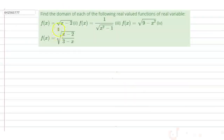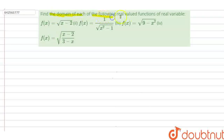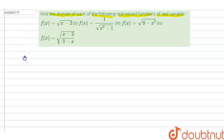Hi, let's start the question. The question says: find the domain of each of the following real valued functions of real variables. Here are four functions given, and we have to find the domain of each. Let's start with question number one.